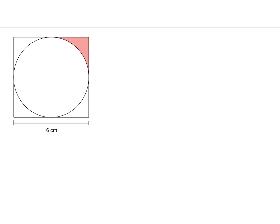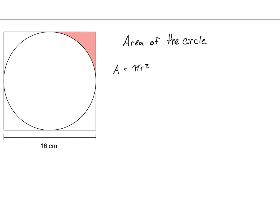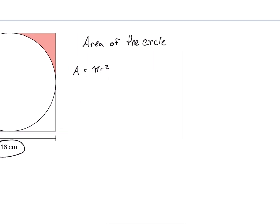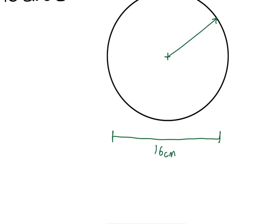We're going to start with finding the area of the circle. The area of a circle equals pi r squared. In this case, we know the diameter of the circle because of the 16 centimeters shown. So I'm going to pull this circle out to the right side — the diameter is 16 centimeters. The diameter is twice the radius, so 16 centimeters is twice the radius, which means r must equal 8 centimeters.